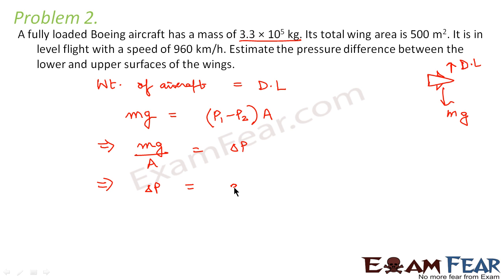So m, that is mass, is given as 3.3 into 10 to the power 5, g is nothing but acceleration due to gravity 9.8, and A is the area, the total wing area is given as 500. So this comes out to the value of the pressure difference.